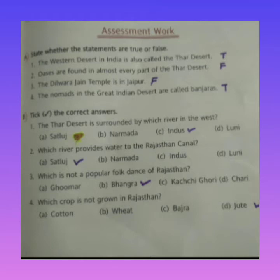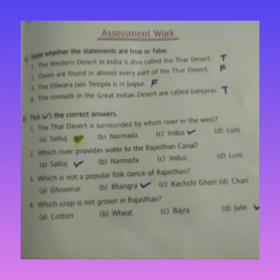Next: the Dilwara Jain Temple is in Jaipur — no, it is false. The Dilwara Jain Temple is in Mount Abu, not Jaipur. Next: the nomads in the Great Indian Desert are called Banjaras.